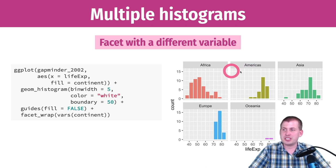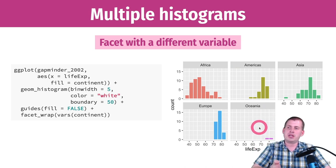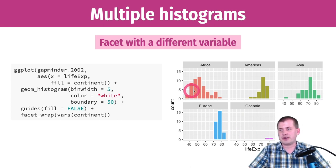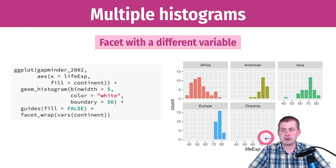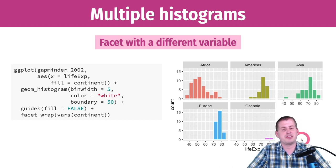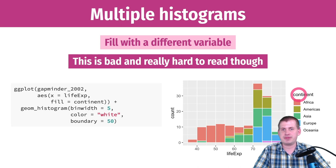If you want to be extra fancy, arrange them in one column so you can compare from top to bottom. You can see that Europe is on the high end of life expectancy, Africa on the low end, Asia is in the middle, and the two Oceania countries — Australia and New Zealand — have high life expectancy. It's much easier to make comparisons across continents this way.